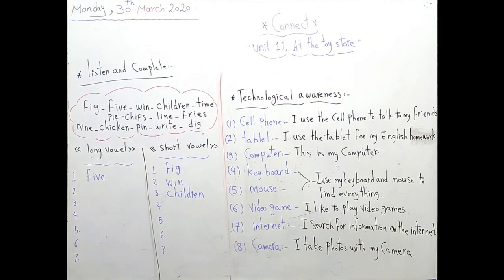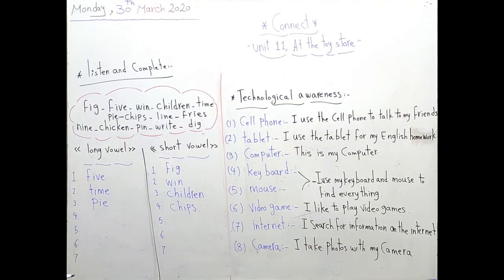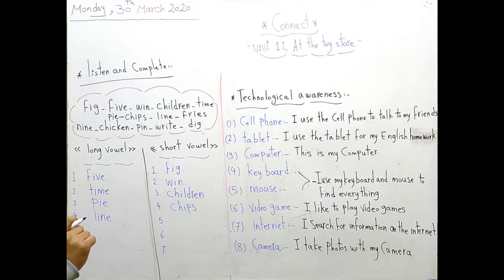Time. Time, it's long, it will be here. Pie. Pie, long. Chips. Chips, it's short. Line. Line, long. Fries. Fries, it's long vowel. Nine. Nine, long vowel.